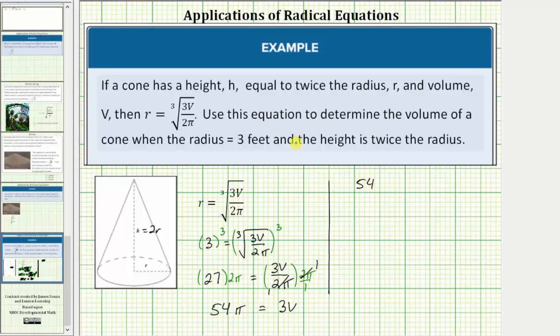So now we have the equation 54 pi equals three v. To solve for v, the volume, the last step is to divide both sides by three.